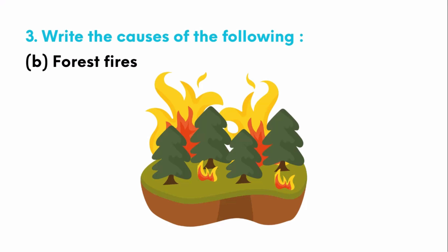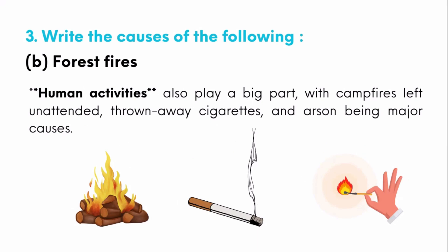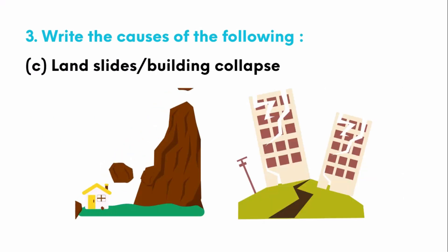Next, what causes forest fires? There are two types of causes. Natural causes include lightning strikes, volcanic eruptions, and very hot weather, which can cause dry plants to catch fire on their own. Human activities also play a big part, with campfires left unattended, thrown-away cigarettes, and arson being major causes.